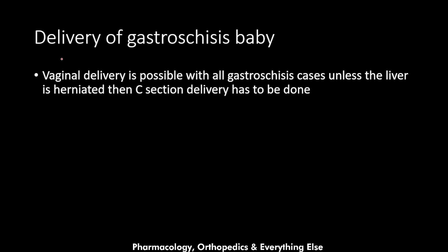Regarding delivery of a gastroschisis baby: vaginal delivery is possible in all cases unless the liver is herniated, in which case a C-section is required. The best time of delivery is at 38 weeks, and it is preferable to induce delivery so the care team is available and ready.